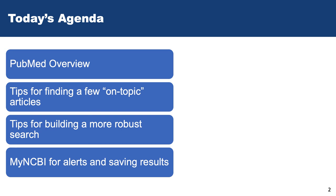The second strategy is a more systematic approach when you need a more robust search. For those who said they were interested in finding evidence for patient care, the first search would be a really good way to do it. Even if you're doing a more robust search, I would say start with the quick and dirty search to see what's out there before you really start developing that systematic approach.